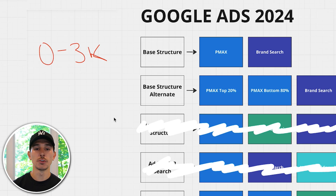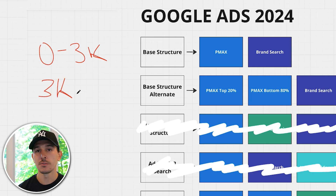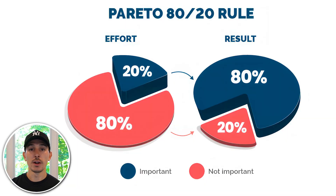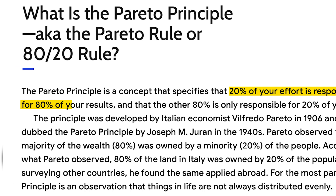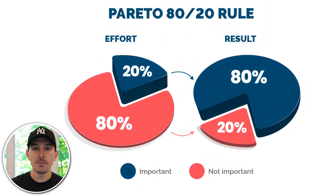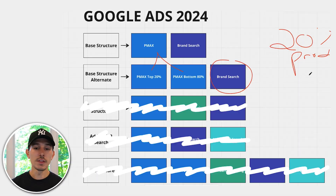The next structure is the base structure alternate, starting at around $3,000. We continue to keep our branded search campaign, but we split Performance Max into a Performance Max top 20% and a Performance Max bottom 80% — in separate campaigns. This is based on the Pareto principle, the 80-20 rule: 20% of your effort is responsible for 80% of your results, and the other 80% is only responsible for 20% of your results. We apply this specifically to Google Ads products and spend allocation.